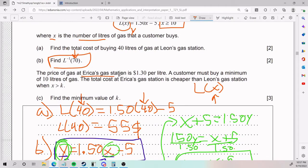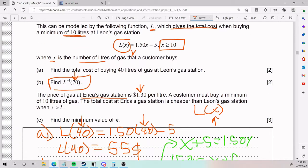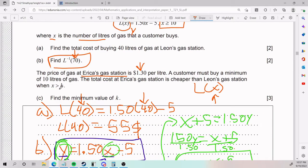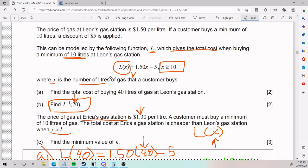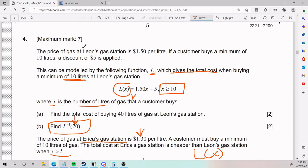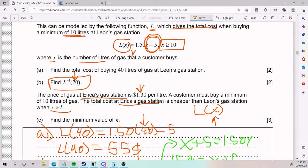Now they tell us the price of gas at Erica's gas station, which is a different gas station, is $1.30 per liter. A customer must buy a minimum of 10 liters of gas, again, just like the other dude. And the total cost at Erica's gas station is cheaper than Leon's gas station when X is greater than K. Find the minimum value of K. So let's take a moment and think about this. If a customer shows up and buys 10 liters of gas, it will be cheaper at Leon's because this guy has a discount. He's got that minus 5. On the other hand, Erica's gas station does not. And so where is Erica's gas station more convenient than this other dude?